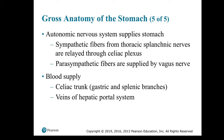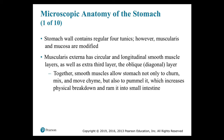In terms of the histology of the stomach, a simple columnar epithelium lines all portions. The stomach wall contains the regular four tunics; however, the muscularis and mucosa are modified. The muscularis externa has circular and longitudinal smooth muscle layers, plus an extra third oblique or diagonal layer which helps in churning. Together, these smooth muscles allow the stomach to not only churn, mix, and move chyme, but also to pummel it — increasing physical breakdown — and ram it into the small intestine.